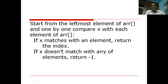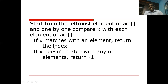Whatever element we are looking for may or may not be present in the list. If it is present, we call it a successful search; if not, it is an unsuccessful search. The steps: starting from the leftmost element, moving toward the rightmost, compare x — which is the key — with every element. If x matches, return the corresponding index. If x does not match after finishing the entire process, return minus one. Minus one is returned only if x is not matched with any element.